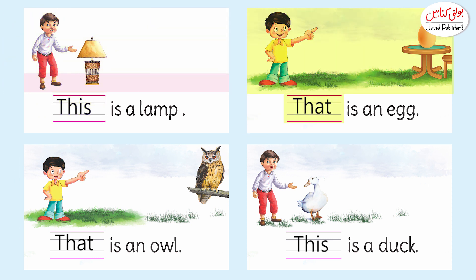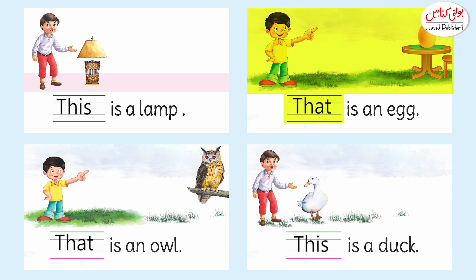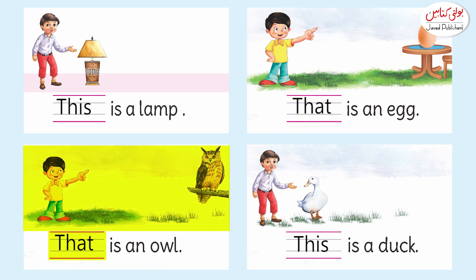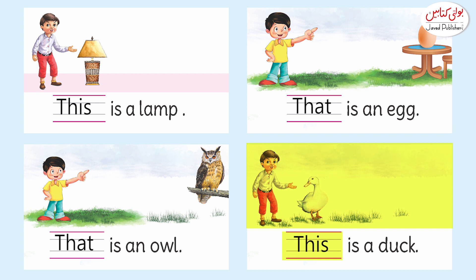Now let's look at the egg — 'egg' in English. Have a look at the picture and tell me whether the egg is near or far from the child. It is far from the child, so we use 'that': 'That is an egg.' The owl is close to the girl, so we use 'this': 'This is an owl.' Now look at the duck — the duck is close in the next picture, so we use 'this': 'This is a duck.'